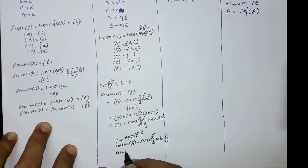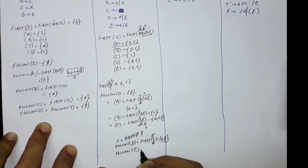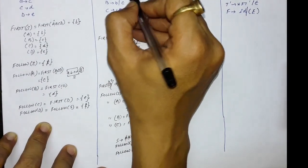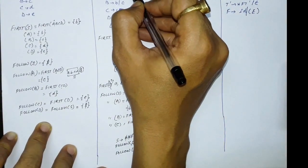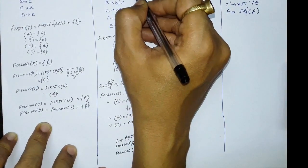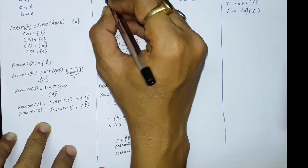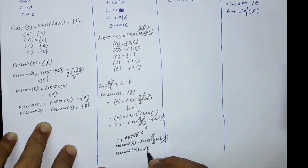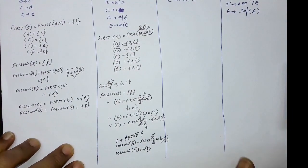FOLLOW of E: E is the last symbol in S produces ABCDE, so there is no symbol after this. FOLLOW of E equals FOLLOW of the left hand side, which is FOLLOW of S, and FOLLOW of S is dollar. So FOLLOW of E is dollar.